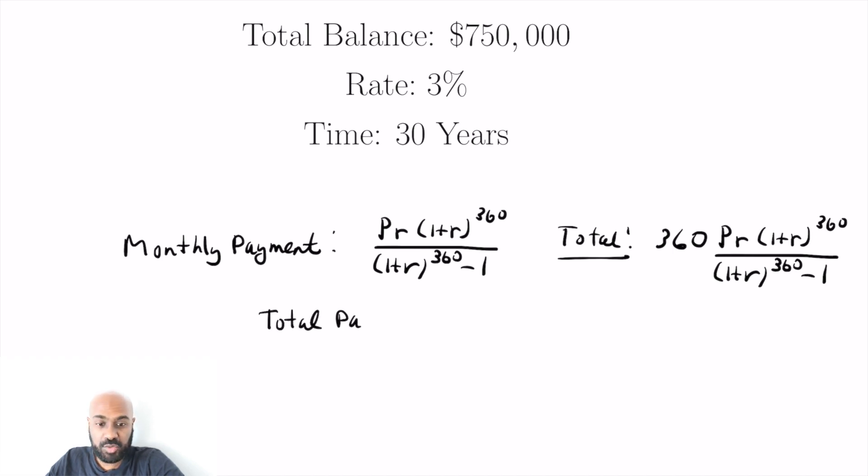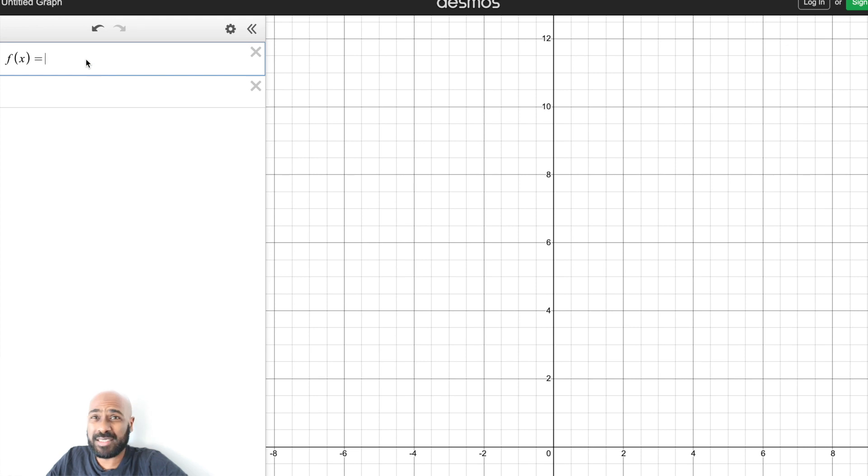So the thing I was curious about with this is like how much profit are banks making off these mortgages? So the total amount you pay is 360 times the monthly amount because that's how many months you pay for. So if I look at the ratio of the total payment over the principal, it's this total amount that we have here divided by P. So that's 360 times R times 1 plus R all raised to the 360 and then divided by the quantity 1 plus R raised to the 360 minus 1. So this is a function that depends solely on R. And so I was curious, like as the interest rate fluctuates,